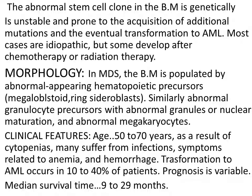The abnormal stem cell clone in the bone marrow is genetically unstable and prone to the acquisition of additional mutations, and the eventual transformation to AML. There is some mutation, some transformation of the stem cell, creating a genetically unstable cell that can get more and more genetic changes and mutations. With the acquisition of more mutations, this has a tendency to transform to AML — it will change to frank leukemia.